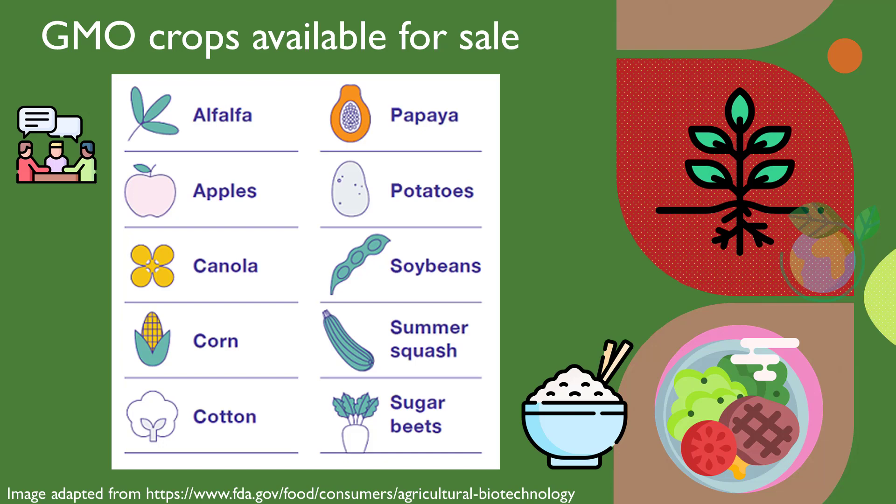Based on the FDA website, GMO soybeans made up 94% of all soybeans planted, GMO cotton made up 94% of all cotton planted, and 92% of corn planted was GMO corn.